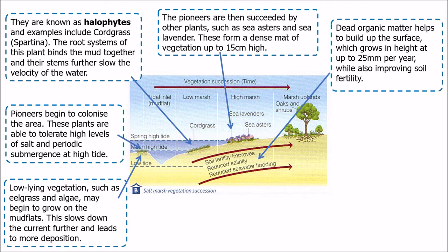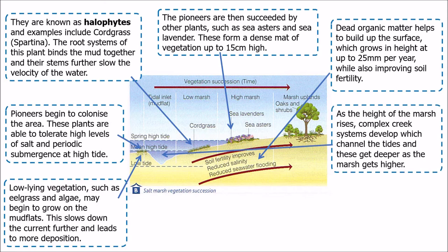Again, there are similarities with the way succession happens on a sand dune ecosystem. As the vegetation rots down, it adds organic matter or humus into the soil, helping it to retain water and improve fertility. What will also happen as the marsh rises is that a complex series of creeks or little streams develop, channelling the tide on and off the marsh. Those channels get deeper and deeper as the marsh gets higher, creating pockets of marsh above the water level with channels between them that fill and drain as the tide comes in and out.